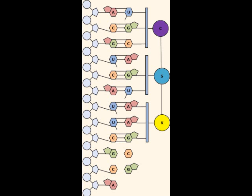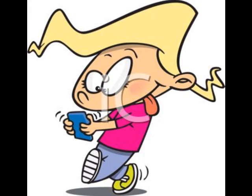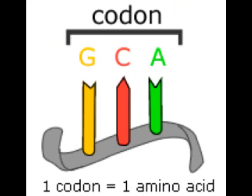Translation is the process that comes next. It decodes mRNA like reading a text. In the mRNA, there's a codon that is read of three nucleotides. That codon carries amino acid instructions from mRNA, showing the order in which amino acids should be joined together.